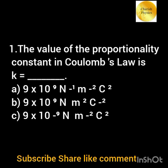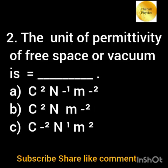Option c) 9 × 10⁻⁹ N m⁻² C². The unit of permittivity of free space or vacuum is equal to: option a) C² N⁻¹ m⁻²; option b) C² N m⁻²; option c) C⁻² N m².